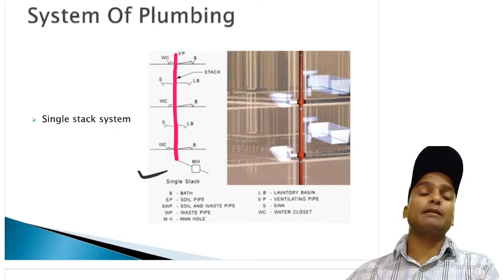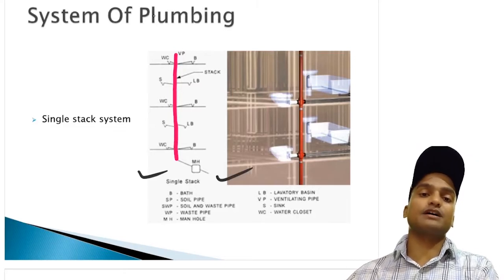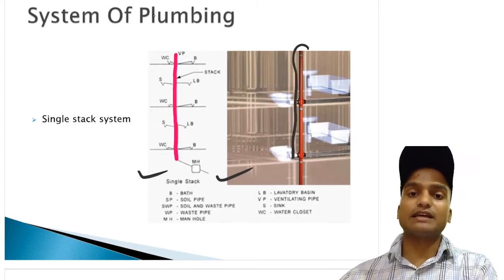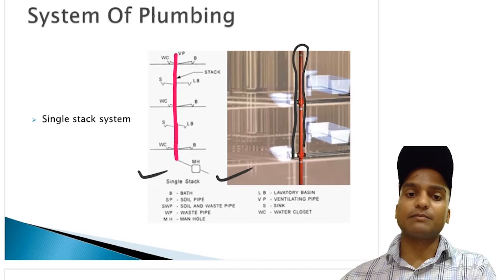This pipe is the wastewater pipe, the soil pipe and the vent pipe. This is the only one pipe we use and such a system is called single stack system. This one is the plumbing layout diagram and this one is the real life scenario.